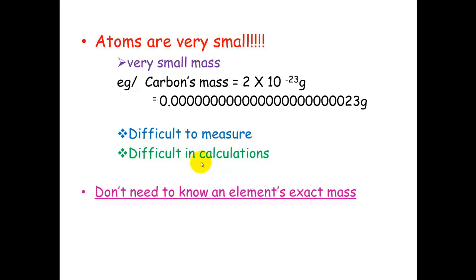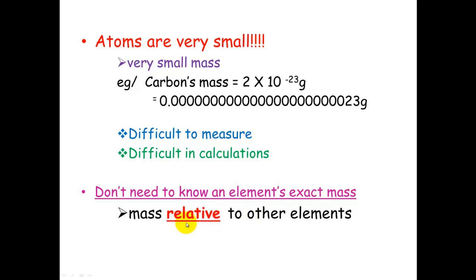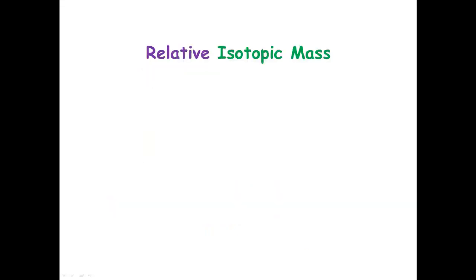Chemists have come up with a solution for that. We don't need to know an element's exact mass, but what we do need to know is the mass relative to other elements. This is where we've come up with relative isotopic mass.